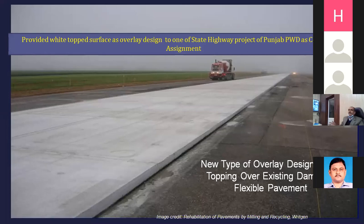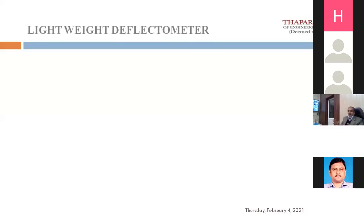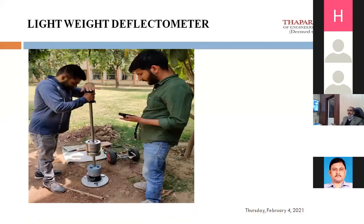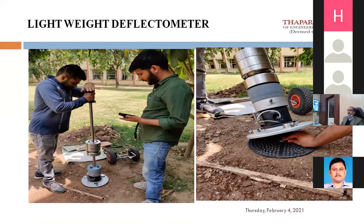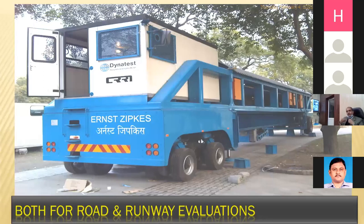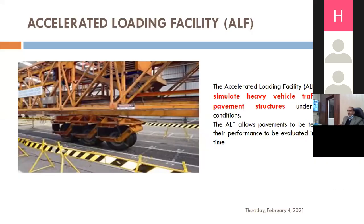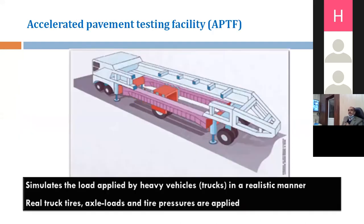We'll discuss how to get overlay thickness based on FWD or BBD deflection studies for white-topping design. LWD studies are also being done in the lab, making trial sections in granular layers and performing deflection studies. One important piece of equipment is the APTF — Accelerated Pavement Testing Facility — available at CRRI, used to simulate heavy vehicle traffic on pavement structures for research purposes. The failure equations in IRC 37 and Australian codes come from this kind of accelerated pavement testing facility.